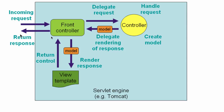This is the complete flow of any request in Spring MVC. In the example we created, we configured the dispatcher servlet in web.xml. The controller we used is the login controller, the view template is login.jsp, and the servlet engine is Tomcat. We haven't created a model yet, but we will very soon. That's a little bit of the Spring MVC architecture.